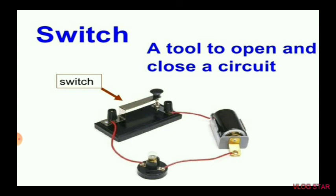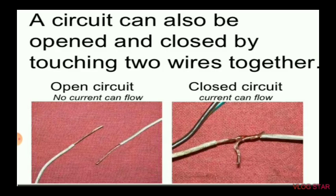When you use the switch, you can open or close the circuit. When you close it, the light bulb turns on; when you open it, the light turns off. A circuit can also be opened and closed by touching two wires together — touching the copper parts of two wires together closes the circuit.